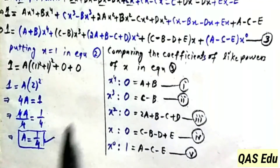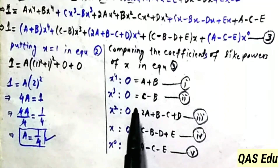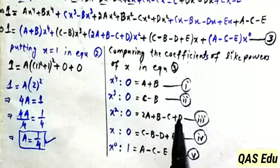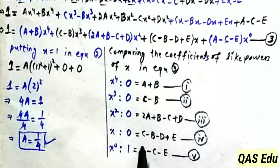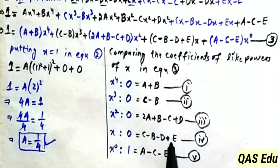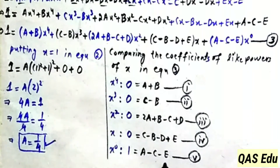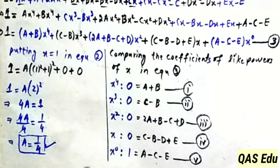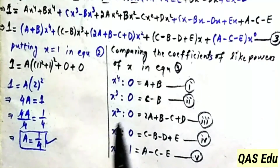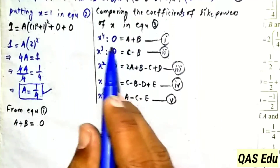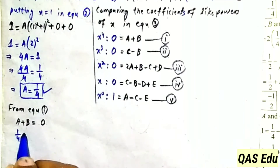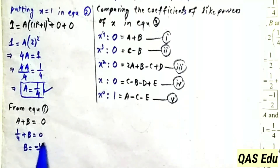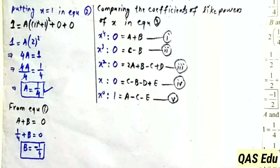We already know A. From equation 4 (A plus B equals 0), putting A equals 1 over 4: 1 over 4 plus B equals 0, so B equals minus 1 over 4. B value is now known.